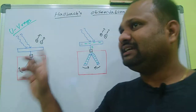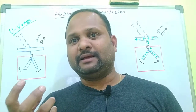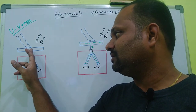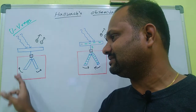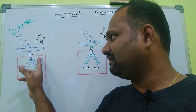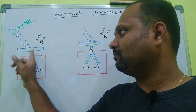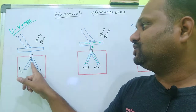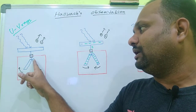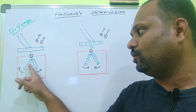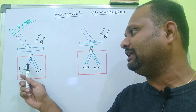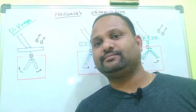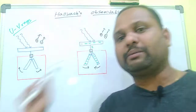Let us consider his experimental setup. He took a zinc metal plate mounted on an insulating stand. And another arrangement is the gold leaf electroscope, which is connected with the zinc plate with the help of a conducting wire. This is the arrangement Mr. Hallwock made.